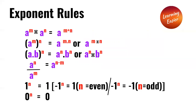A to the power of n is equal to a to the power of n times b to the power of n. A to the power of n divided by a to the power of m is equal to a to the power of n minus m. 1 over a to the power of n is equal to 1 over a to the power of n.